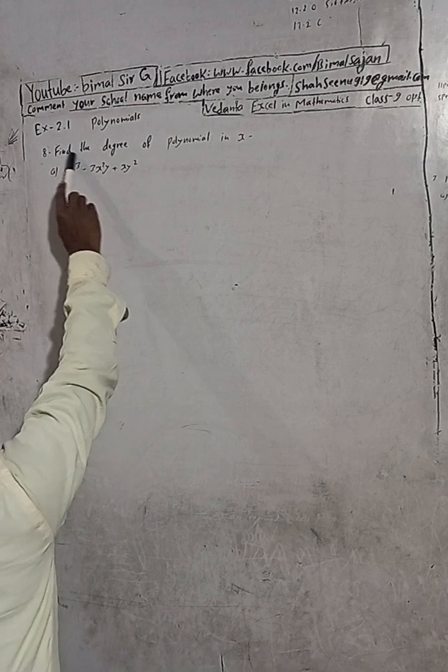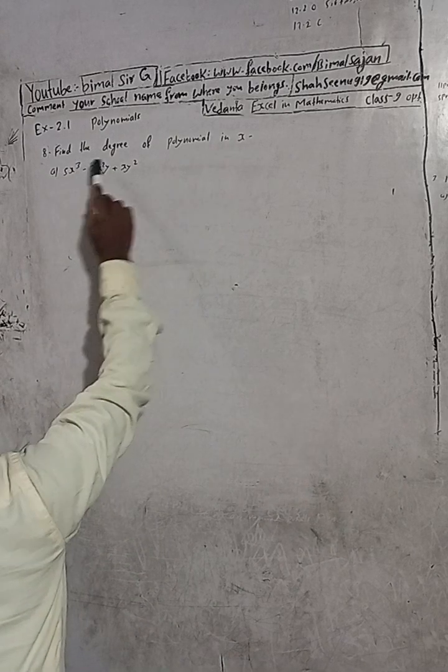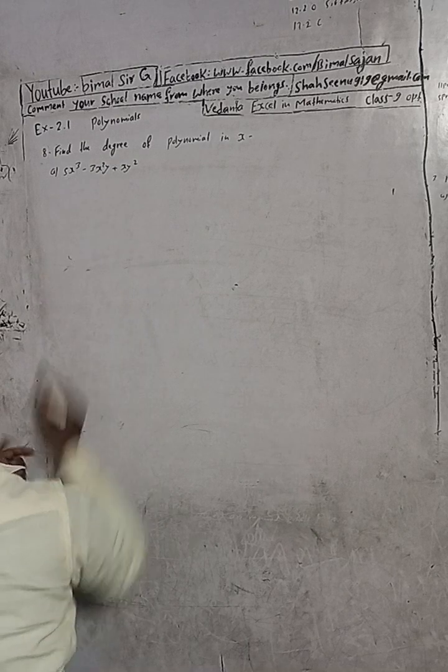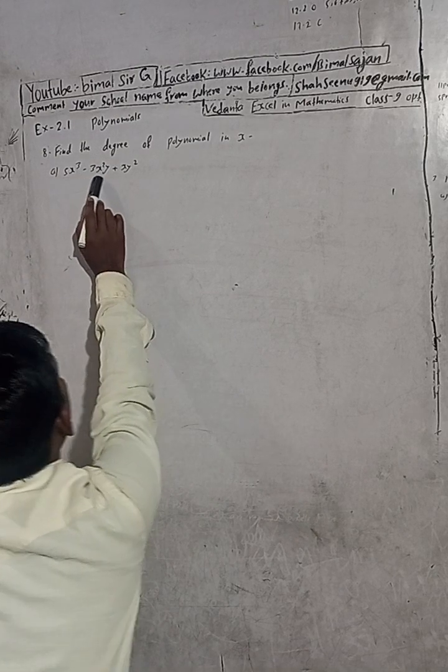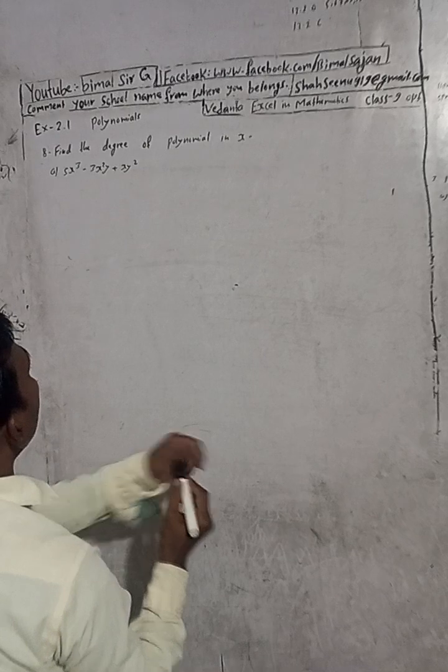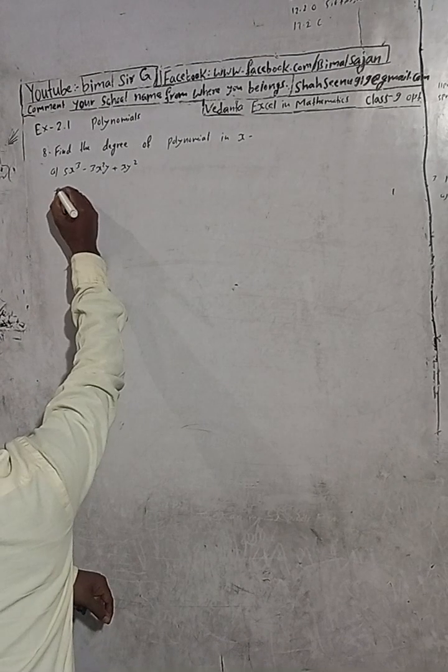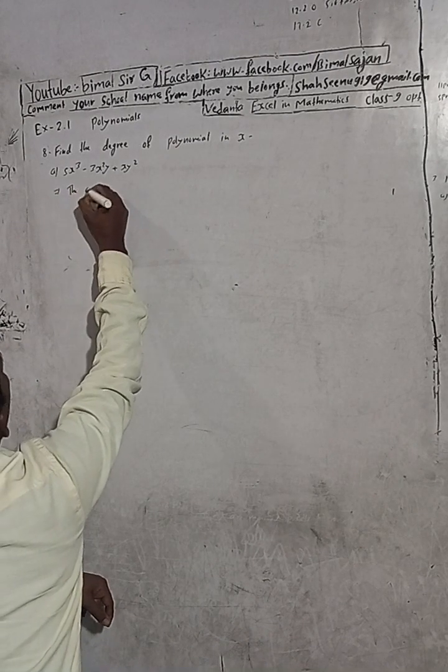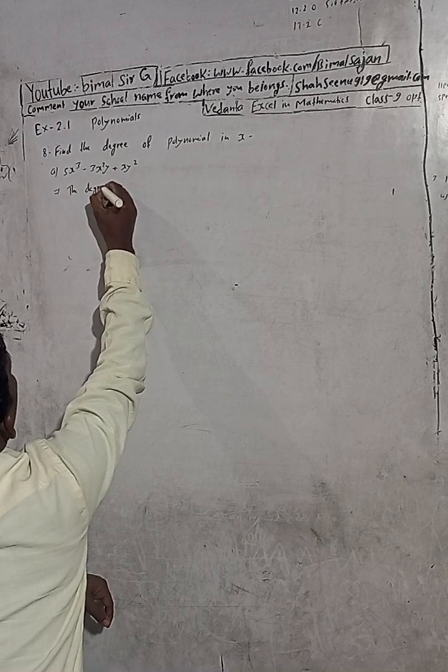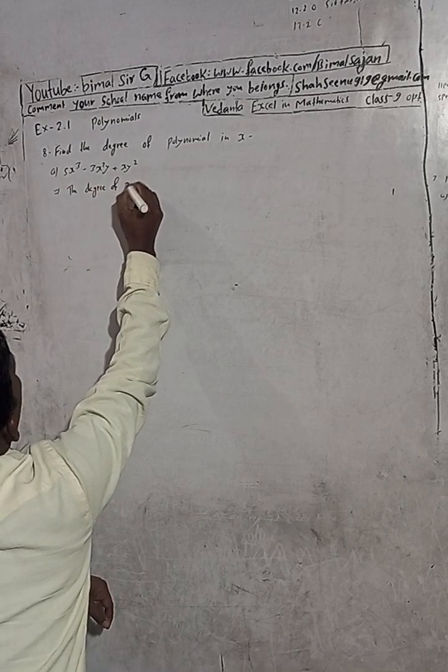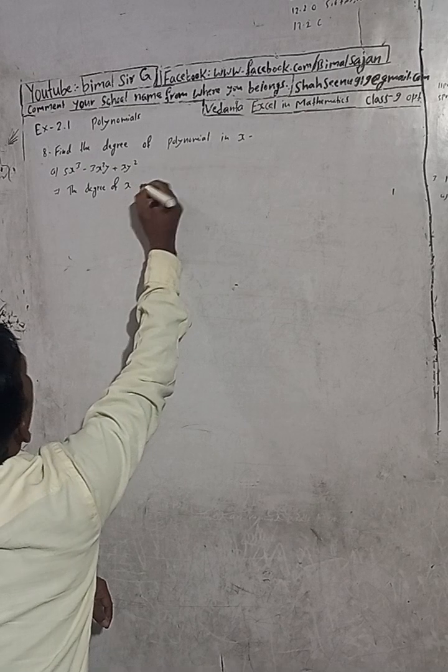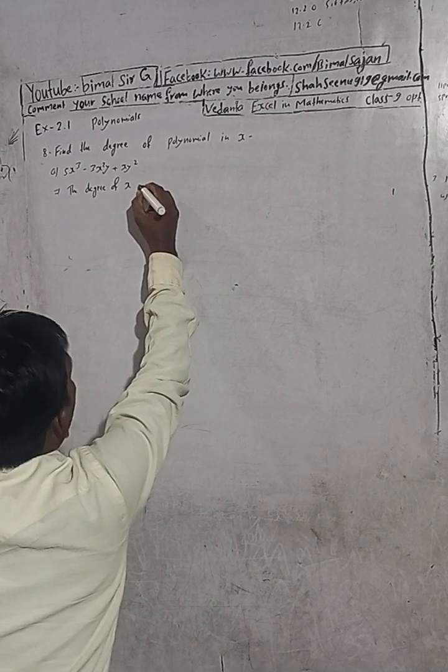The first question, number 8: Find the degree of polynomial in x. So this is part a, the polynomial is 5x³ - 3x²y + 5xy².